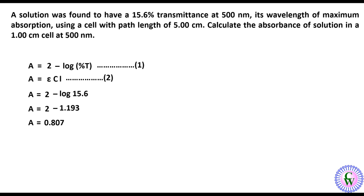Given that the value of L is 5 cm, putting the value of A and L in equation number 2 will give 0.807 is equal to epsilon C into 5, or epsilon C is equal to 0.807 upon 5, that will be equal to 0.1614.